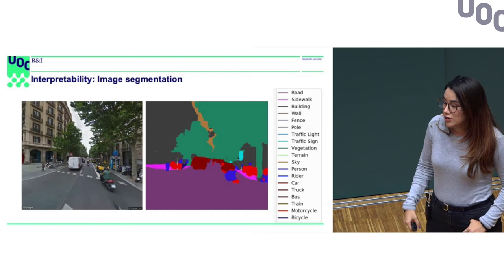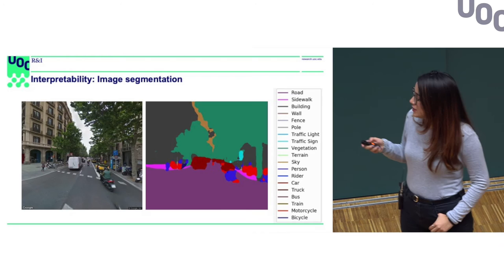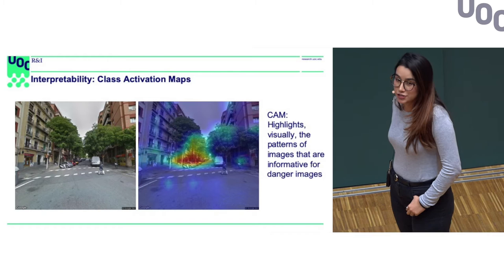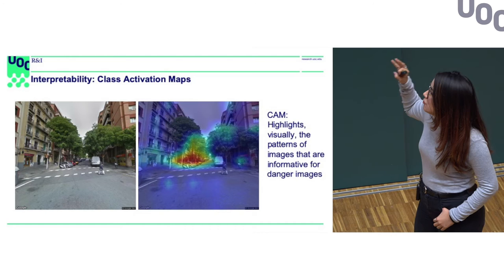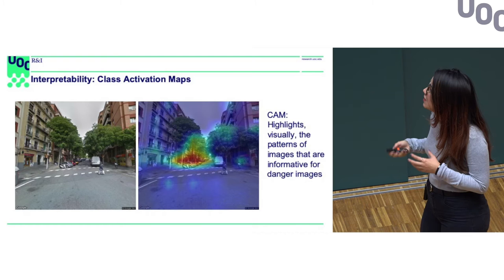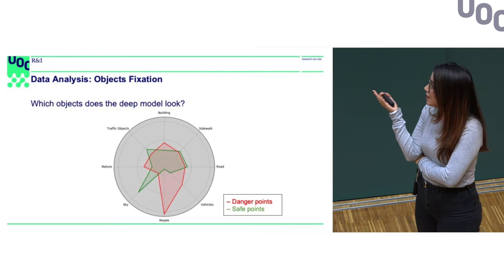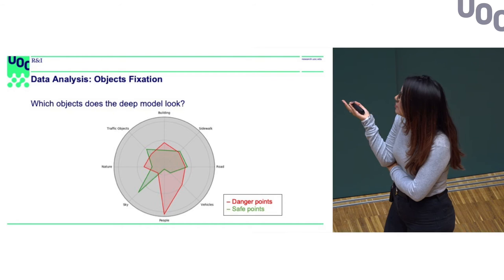Now that we know which points are dangerous and which are not, how can we know which objects inside the image influence the dangerousness the most? For this, we apply two deep learning techniques. One is image segmentation, which identifies what objects are inside the urban scene and where they are. The other is class activation mapping, which highlights the regions of the urban scene most informative to the AI when assigning a danger score.